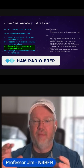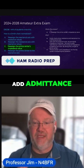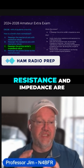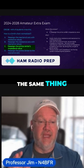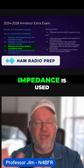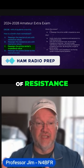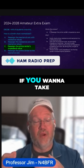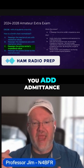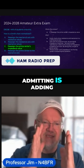Using the Smith chart to match impedance, you do something called admittance, which is the inverse of impedance. Resistance and impedance are essentially the same thing used in different contexts — both measured in ohms. So if you want to take away some resistance, you add admittance. Impeding is stopping; admitting is adding.